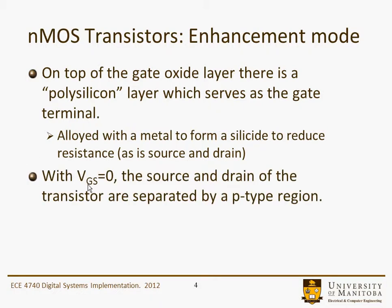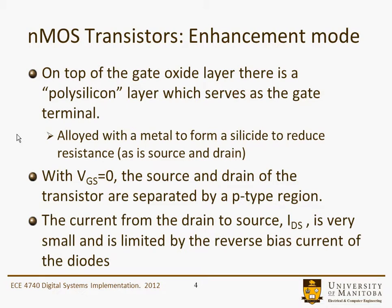With the gate voltage VGS equal to zero, the source and drain of the transistor are separated by a p-type region. So the current from the drain to the source, IDS, is very small and basically limited by the reverse bias current of one of the diodes that would be formed.